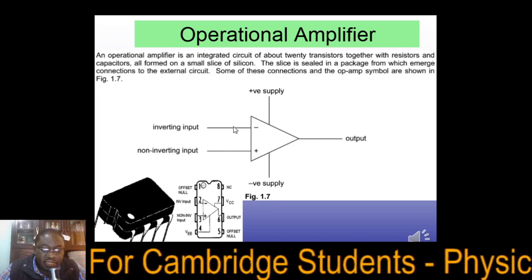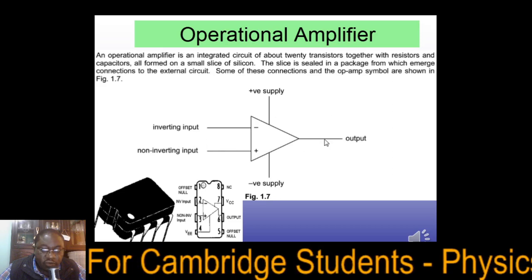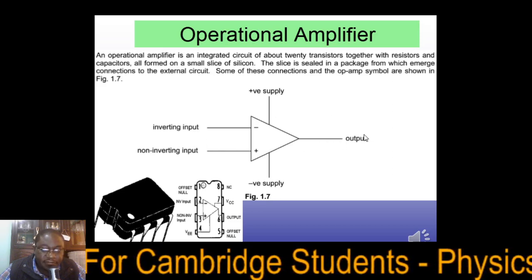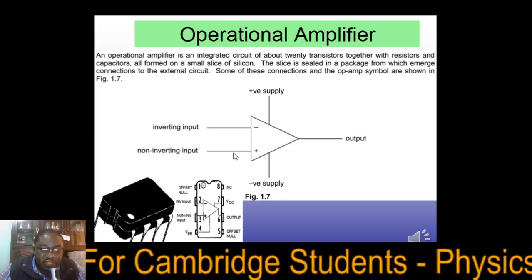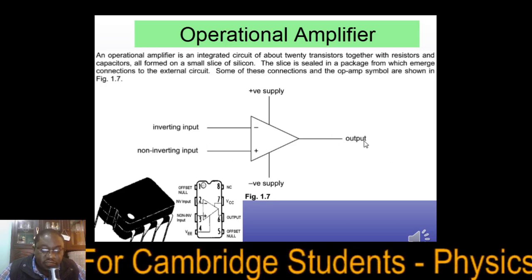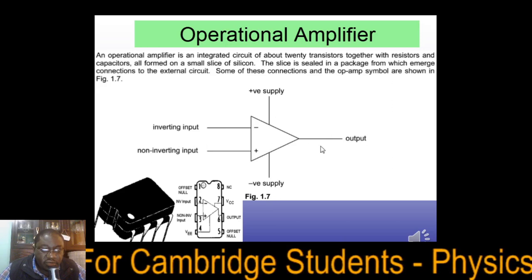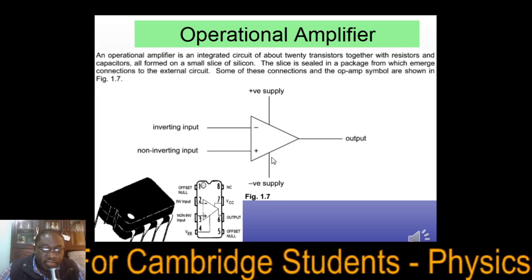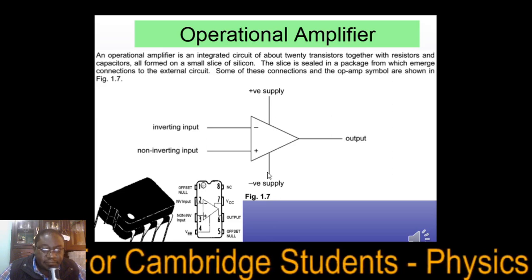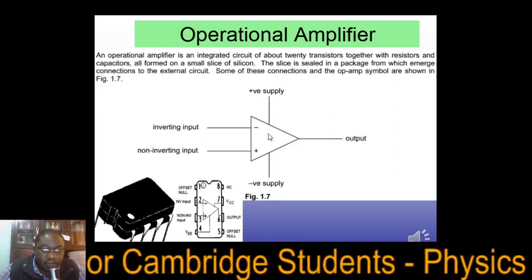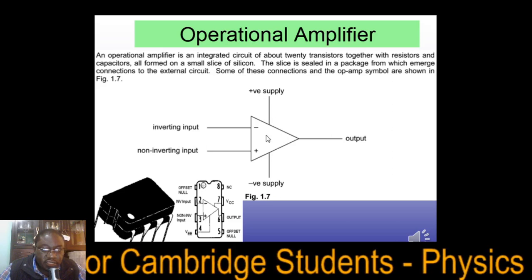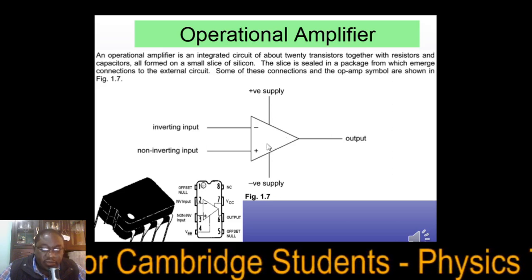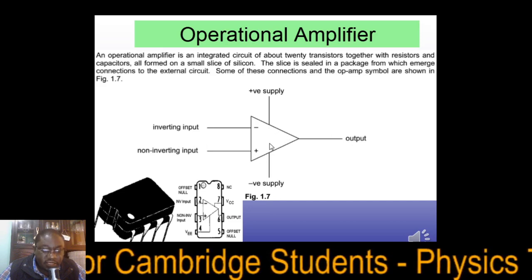If one of the inputs is greater, you can determine what output value you're going to get — whether positive or negative. Remember: the non-inverting input produces a positive output voltage, and the inverting input produces a negative output voltage. The positive and negative supply is the potential difference used to energize the components inside, which are transistors, diodes, etc.